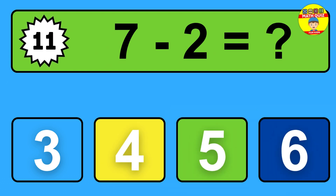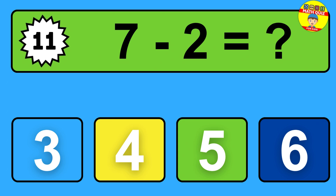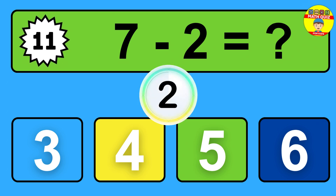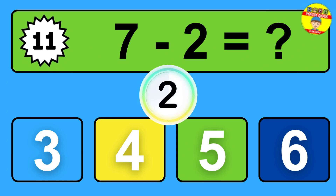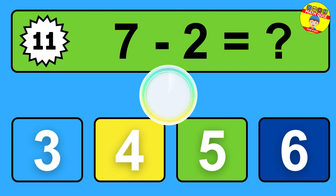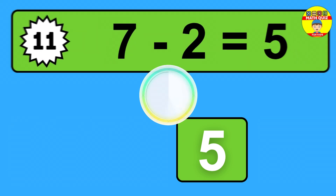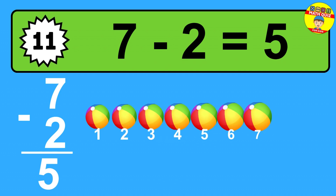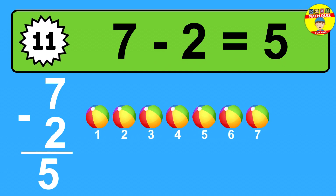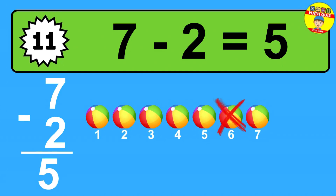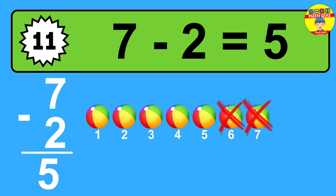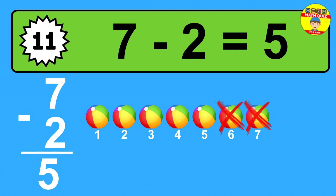Question eleven: seven minus two equals what? The answer is seven minus two is five. Let's count it: one, two, three, four, five.